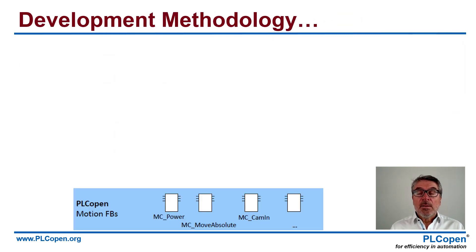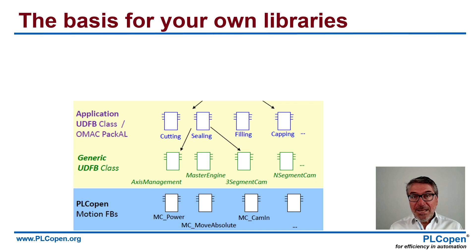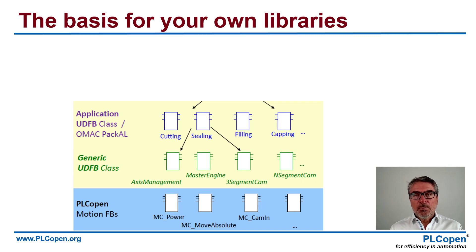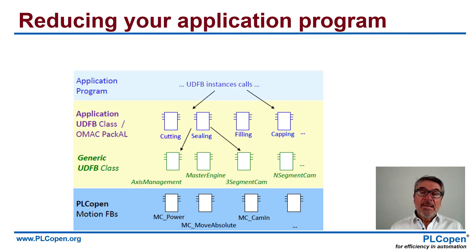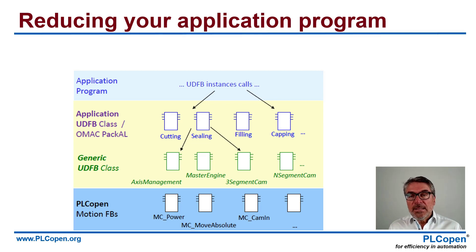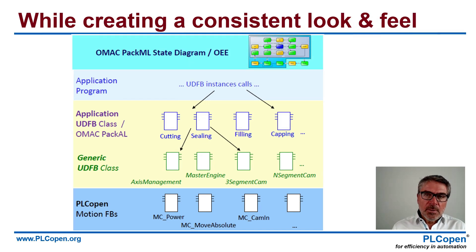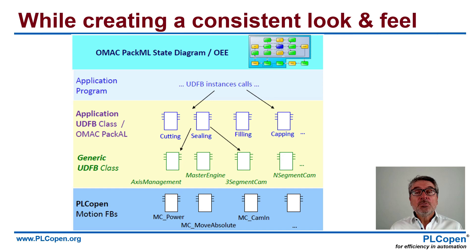That is part of a development methodology. You take the existing libraries and put on top of them your own libraries — with the guidance defined in this document — and create your own higher-level function blocks with higher-level functionalities. That makes the development of your application program much quicker, because you use the instance calls of these higher-level functionalities, giving you a smaller, cleaner program. What we always advise is to put a consistent state machine on top of that, because it gives a consistent look and feel to your machine, production line, or part of a machine.